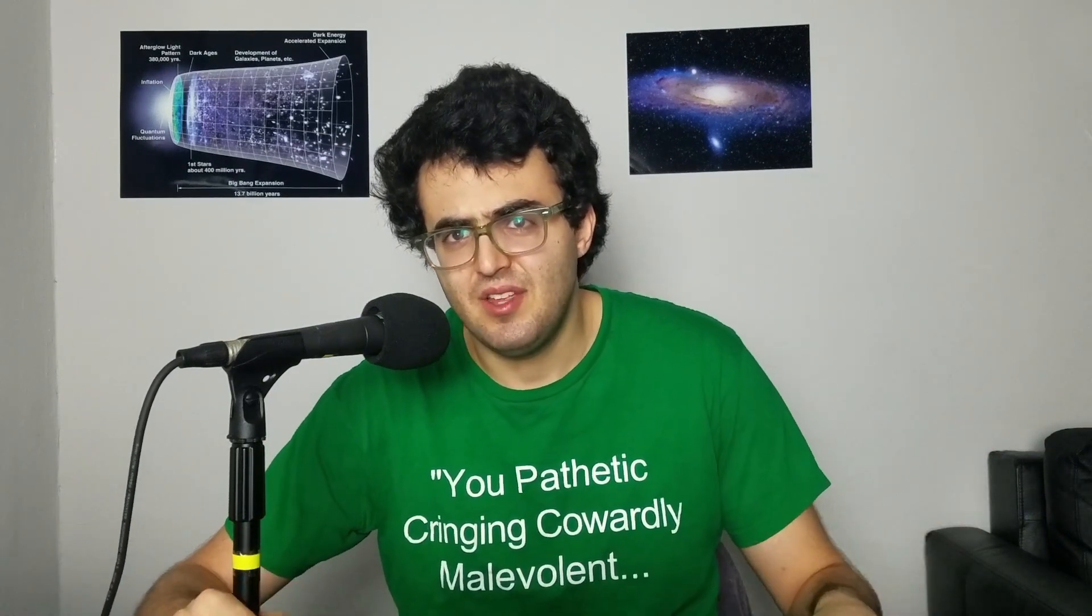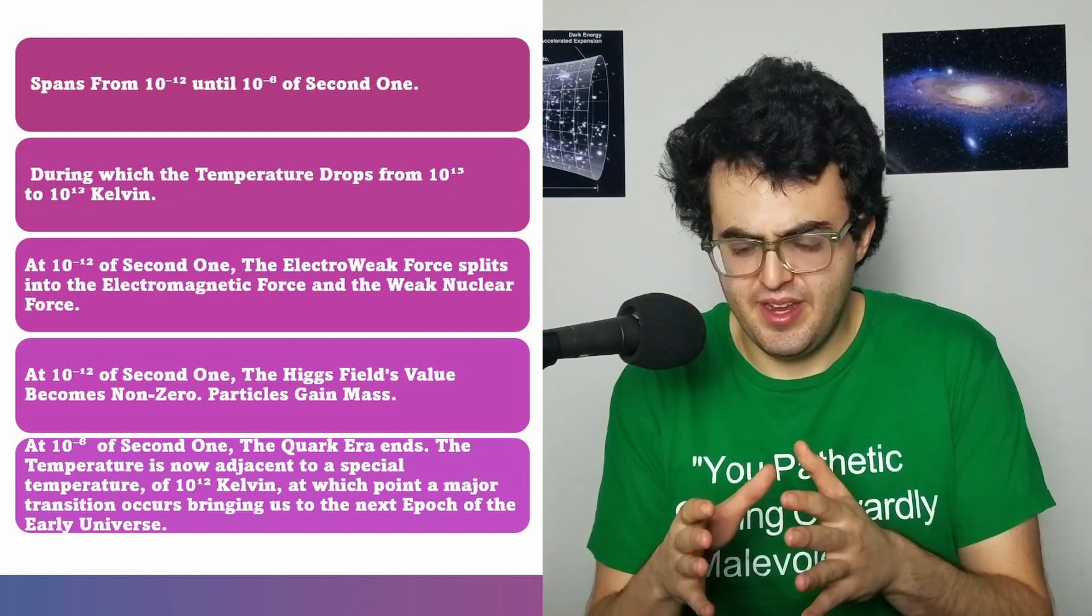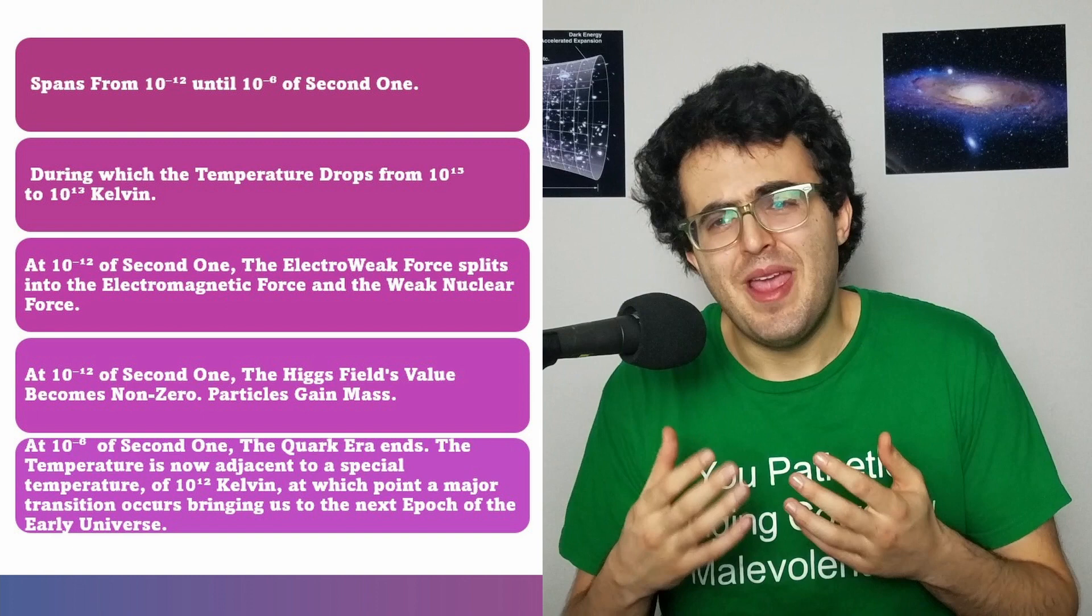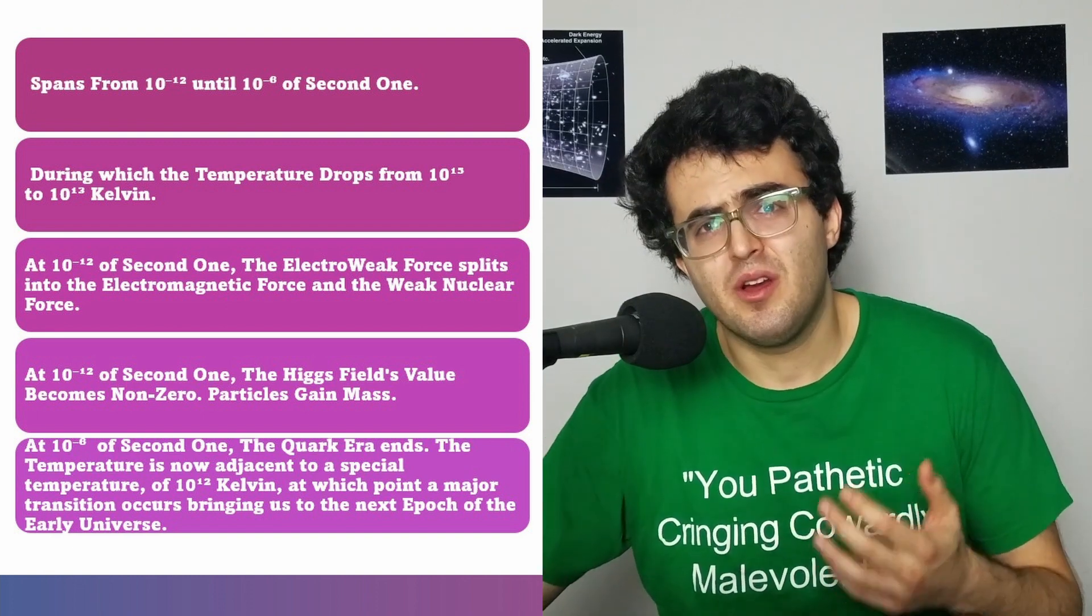That's at a temperature of 10 to the 15 Kelvin and throughout this entire time period the universe is filled with the plasma whose main components are quarks and anti-quarks and gluons. So it's called the quark gluon plasma.